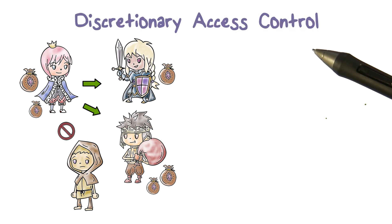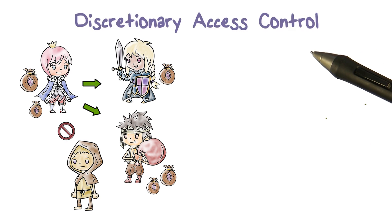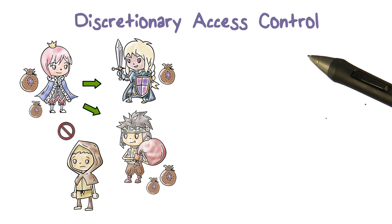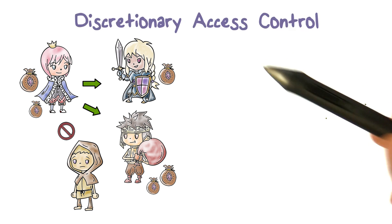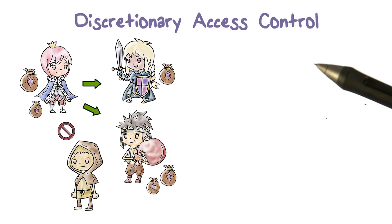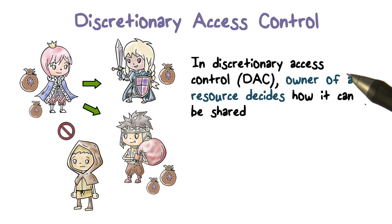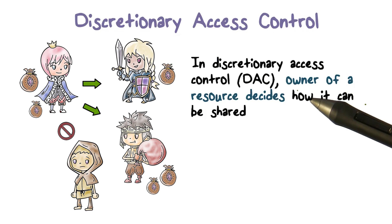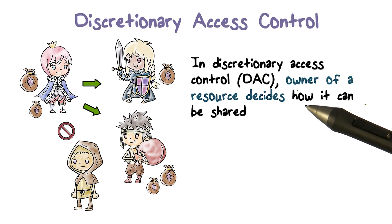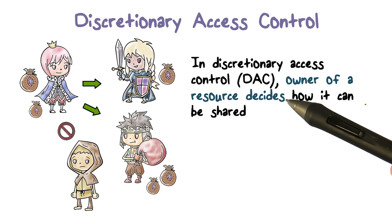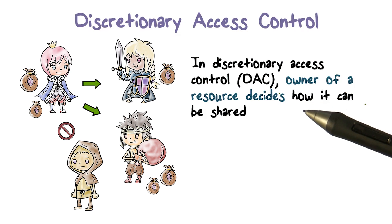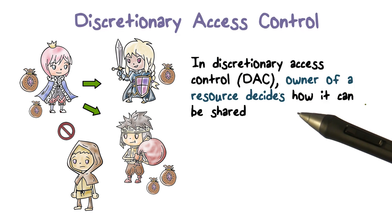In the last lesson, we focused on access control — in particular, what we called discretionary access control. The idea there is that access control is about checking if the source of a request should be able to gain access to a resource. We know who the user is because the user comes and authenticates himself or herself.